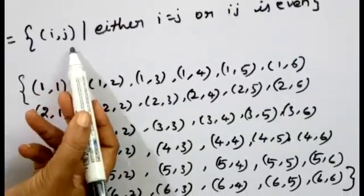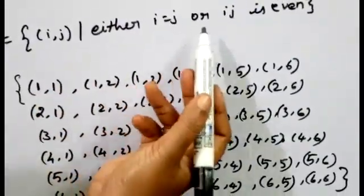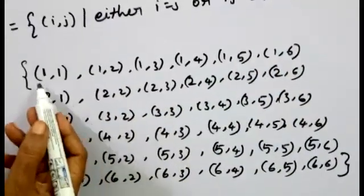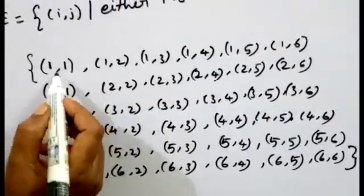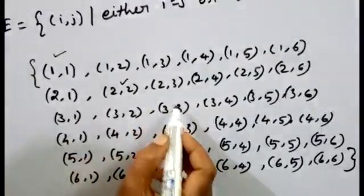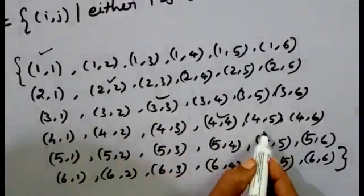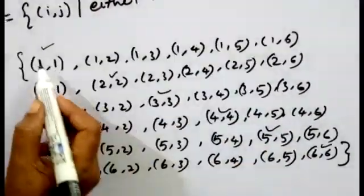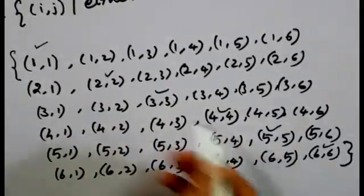So either i equals j or ij is even. For the case where i equals j, we have: (1,1), (2,2), (3,3), (4,4), (5,5), (6,6). So we can count these 6 outcomes.